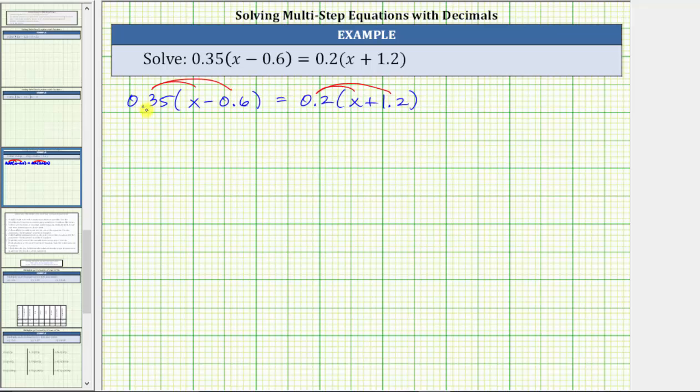Distributing on the left, 0.35 times x is 0.35x, minus 0.35 times 0.6 is 0.21, equals on the right side, distributing 0.2, we have 0.2 times x, or 0.2x, plus 0.2 times 1.2, which is 0.24.